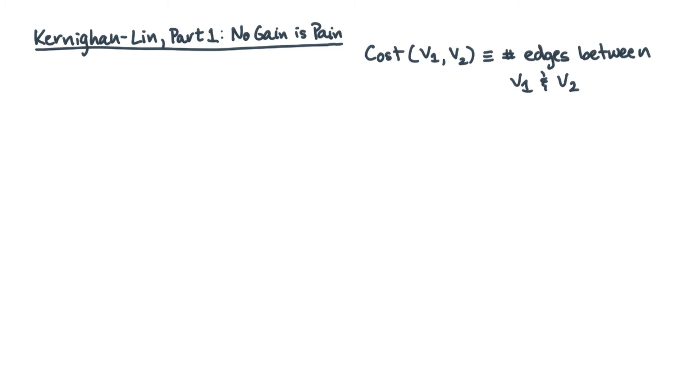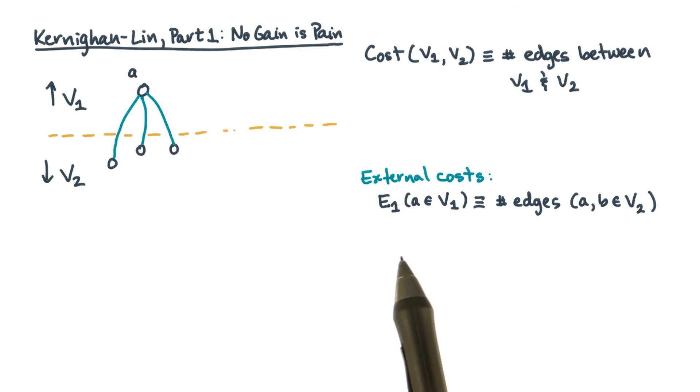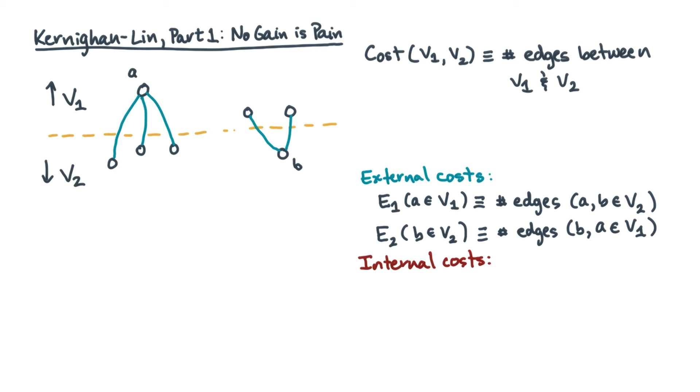Consider one vertex, let's call it A, which lives on one side of a partition. Define its external cost as the number of edges that land in the other partition. In this cartoon, A's external cost, denoted E1 of A, is equal to three edges. Define a similar external cost, E2 of B, for any vertex B that lives in V2. Next, define the notion of an internal cost. The internal cost will count the number of edges from a vertex to other vertices that live in the same partition.